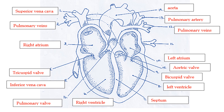The most important parts for you to know are the atria — the right atrium and left atrium at the top — and the ventricles at the bottom. You should also know that the muscle separating them is the septum, and that the big round structure here is the aorta.